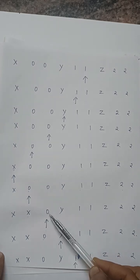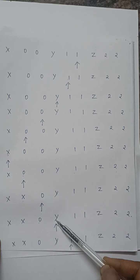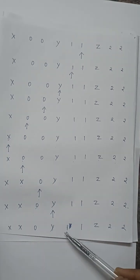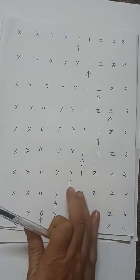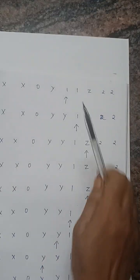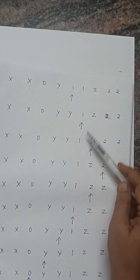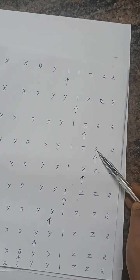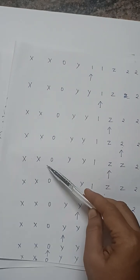Moving right, the machine reads remaining zeros and writes zeros, reads y and writes y, looking for the second one. When it finds the second one, it replaces it with y. Then it reads ones and reads z values, continuing right until it finds the second two, replacing it with z.